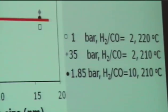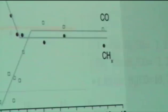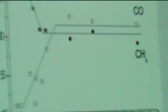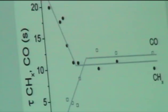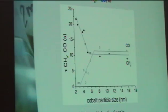Moving on to the first results: the residence times of CHX and CO plotted as a function of cobalt particle size. You see that the CO residence time decreases below 6 nanometers, while at the same time there is an increase in the residence time of CHX. This is most likely because for small cobalt particle sizes there is a stronger interaction between the cobalt surface and the CHX intermediates.